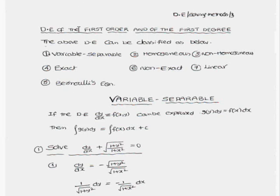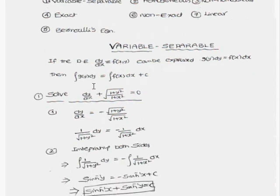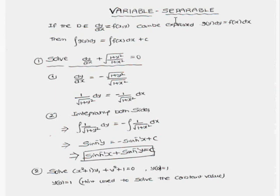We are going to discuss first order and first degree differential equations. The order should be 1 and the degree should be 1. The types of equations can be classified as: variable separable, homogeneous, non-homogeneous equations, exact equations, non-exact equations, linear equations, and Bernoulli equations. So, differential equations of the first order and first degree can be classified into these 8 types. Now we are going to discuss the variable separable method.